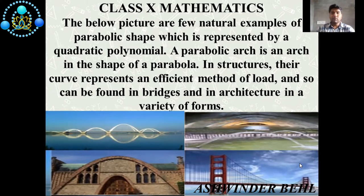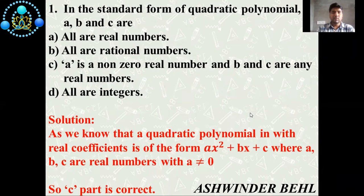On the basis of these pictures, some questions are there. First question is: in the standard form of quadratic polynomial, a, b and c are: a) All are real numbers. b) All are rational numbers. c) a is a non-zero real number and b and c are any real numbers. d) All are integers.